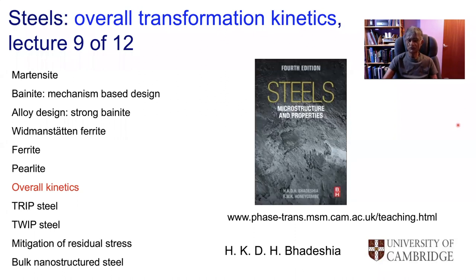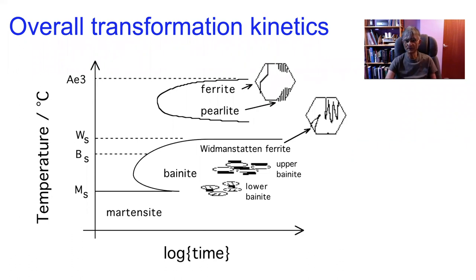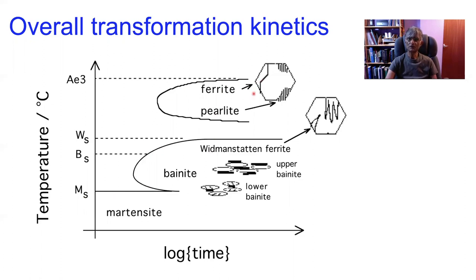Today we will deal with overall transformation kinetics, where the desire is to estimate the volume fraction of transformation as a function of all the parameters involved in generating the final microstructure. The usual way of representing overall transformation kinetics is by an isothermal transformation diagram, often known as the time-temperature transformation diagram, where if we supercool the austenite into a particular temperature regime, holding at that temperature will lead to the evolution of a particular microstructure consistent with that temperature. Although in this diagram we only have curves representing the initiation of transformation, you normally have a family of curves representing the progress of the transformation as a function of time.